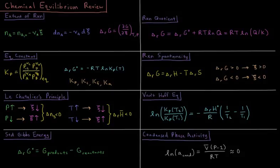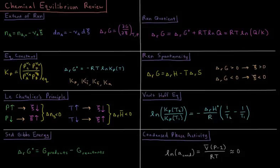Throughout this chapter we express various equilibrium constants in terms of pressure, in terms of molarity, in terms of fugacity, and in terms of activity. They all have the same structure but with the various different quantities, and there are interconversions between those forms.